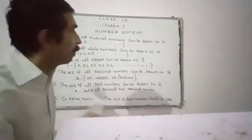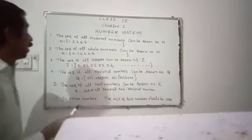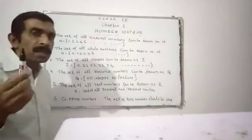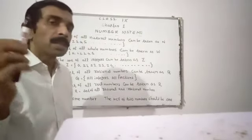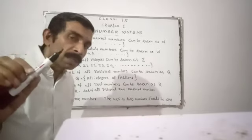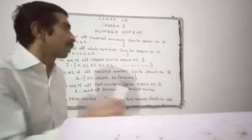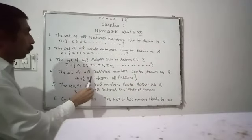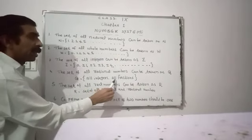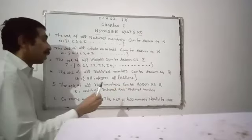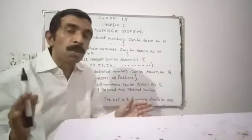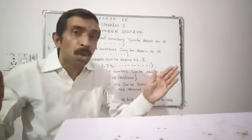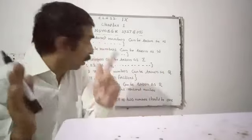Integers can be taken as Z. Next, the next part about rational number. The set of all rational numbers, we can take as Q, not R. Then, Q is equal to all integers and all fractions. The combination of integers and fractions are rational numbers.